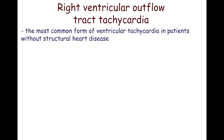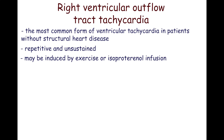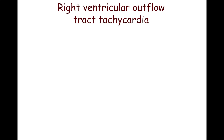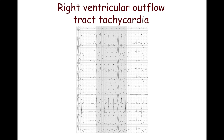Right ventricular outflow tract tachycardia is the most common form of ventricular tachycardia in patients without structural heart disease, electrolyte abnormalities, and long QT syndrome. Often it is repetitive and unsustained. It may be induced by exercise or isoproterenol infusion. ECG features include left bundle branch morphology, inferior axis with tall R wave in the inferior leads, absence of precordial concordance, with RS complex in V1 and R complex in V6, and precordial transition typically situated in lead V3 or V4.